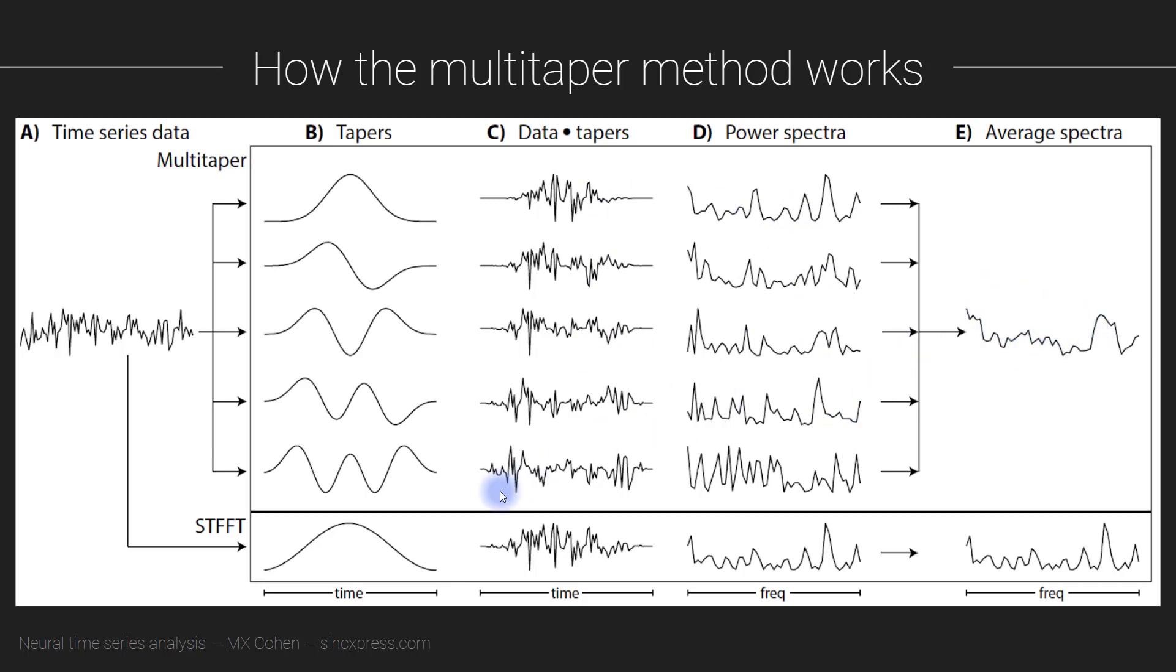Or you can do the short time Fourier transform version where you take this little data snippet and apply only one taper, like a Hann taper, you can see it's not exactly the same as the first Slepian taper here. Then you get one tapered version of the signal, you do one Fourier transform, and you get one power spectrum.